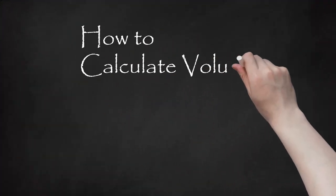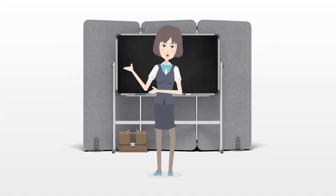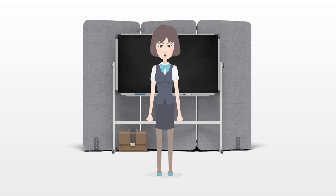How to Calculate Volume and Density. Volume is the amount of space an object occupies, while density is the mass of an object per unit volume.